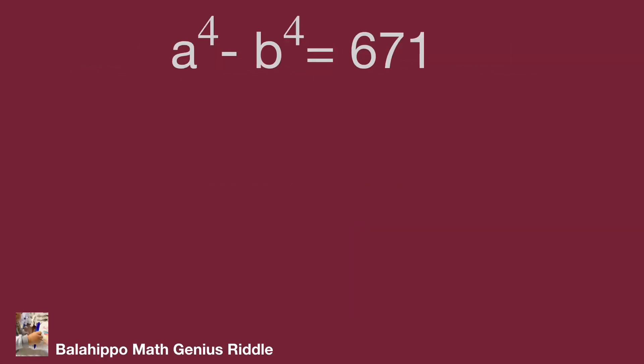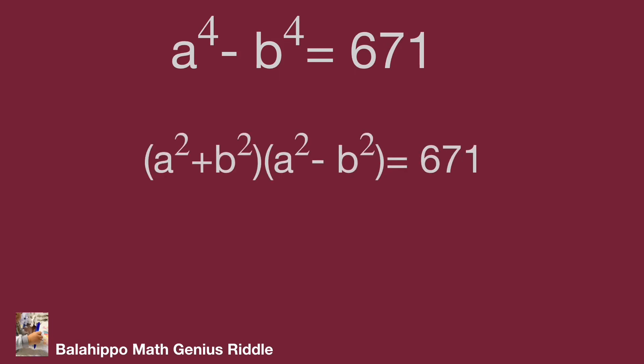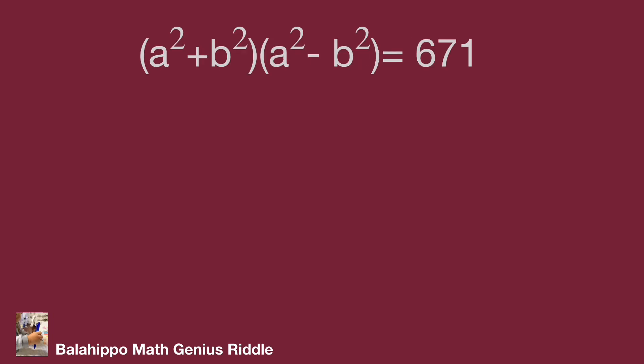The given equation A⁴ - B⁴ = 671 is pretty challenging. There is only one equation with A and B each raised to the power of 4. How can we get more information from this? Firstly, factorize A⁴ - B⁴. The expression becomes (A² + B²) multiplied by (A² - B²) equal to 671.